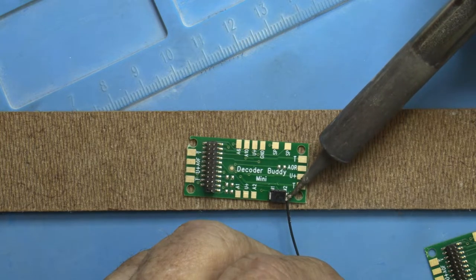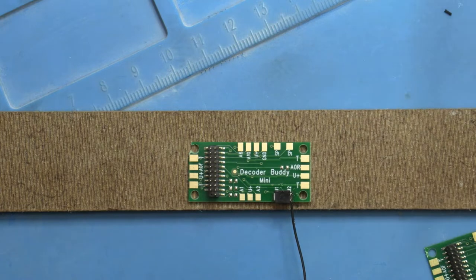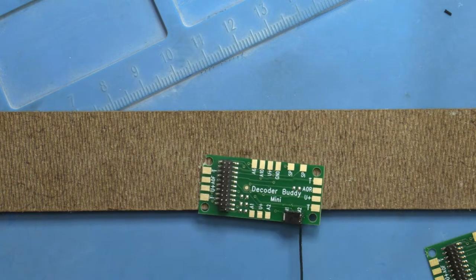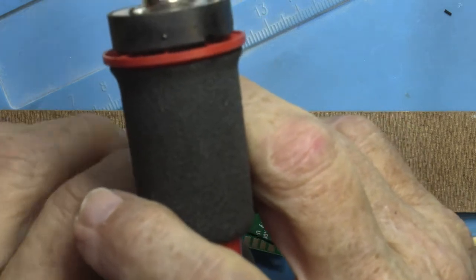You can see just a quick touch of the soldering iron with a little bit of solder on it and that flux will attach that motor wire or the representation of the motor wire in this case.